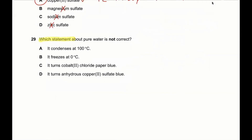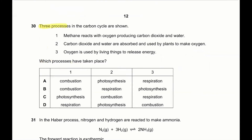Question 29: which statement about pure water is not correct? It condenses at 100°C — pure water boils at 100°C, and does condense at 100°C, so this is a correct statement. It freezes at 0°C — pure water does freeze at 0°C, so that's correct. It turns cobalt chloride paper blue — when water is added to cobalt chloride paper it becomes pink, not blue. So C is wrong, and since we're looking for the not correct statement, 29 C is the answer.